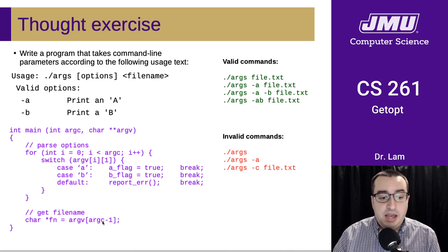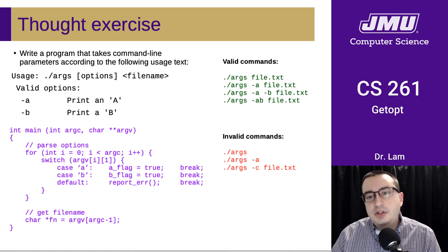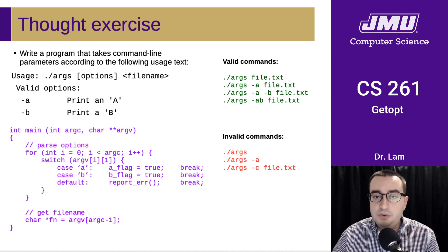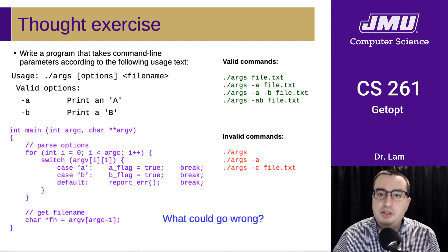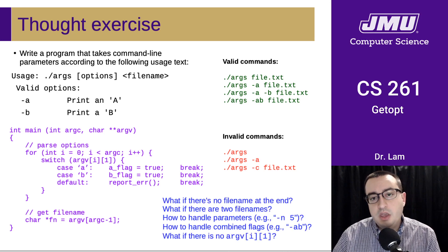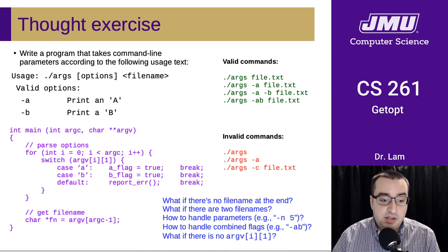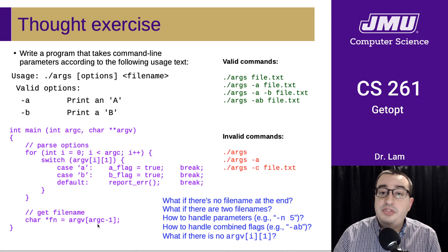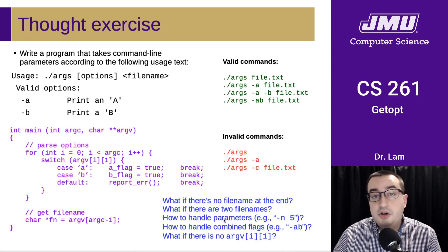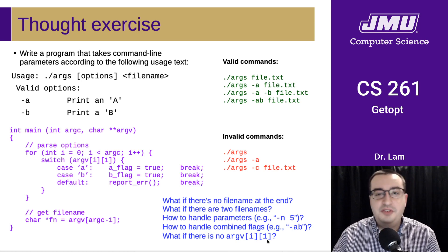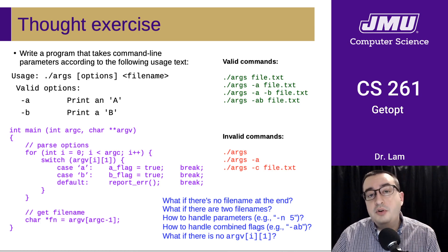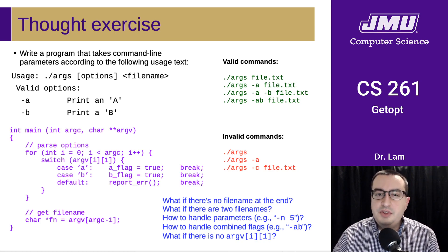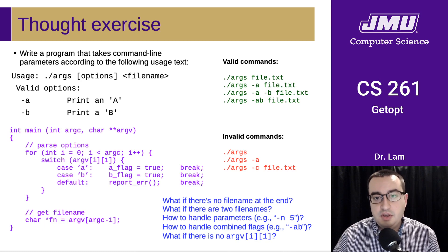This is a decent first stab, but there are actually a lot of holes and problems with this code — a lot of things that could go wrong. What if there is no file name at the end? Then this reference is not going to be valid. What if there are two file names? How do you handle combined flags? What if there is no second character — what if there's only one character in one of the flags? There are just a lot of corner cases you have to deal with.